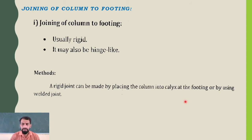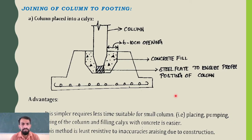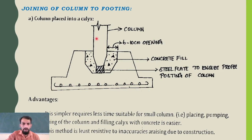Let us see which types of connections are there. In the first method, the column is placed into cleats/pockets. This part is totally acting as the footing. We can see the embedded steel reinforcements, and this is the column which is allowed to be placed into the footing pocket. This opening is what we are calling a pocket or cleat.